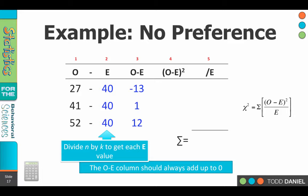Now we get to the squaring. In column 4, square the value that is in column 3, remembering that when you square a negative, it becomes positive. 13 squared is 169, 1 squared is 1, and 12 squared is 144.